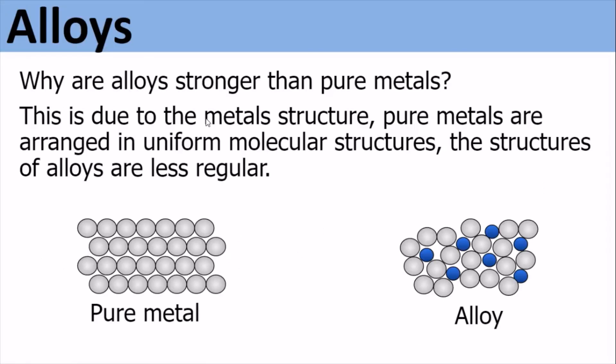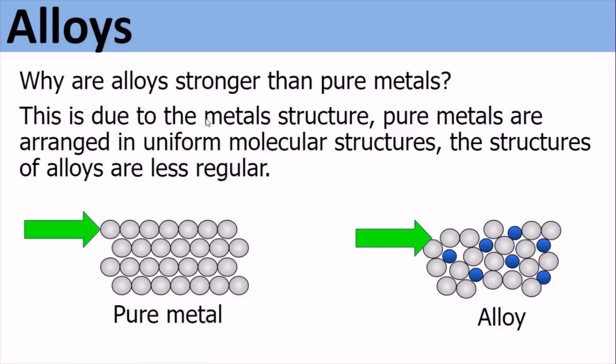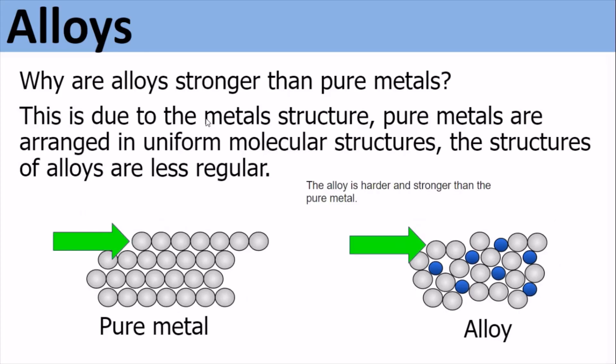Why are alloys stronger than pure metals? This is due to the metal structure. Pure metals are arranged in uniform molecular crystalline structures. An alloy introduces a second material, making the structure different. If we put a load onto a pure metal versus the same load onto an alloy, we can see that the atoms in the pure metal can move more easily. This means that the alloy is harder and stronger than the pure metal.